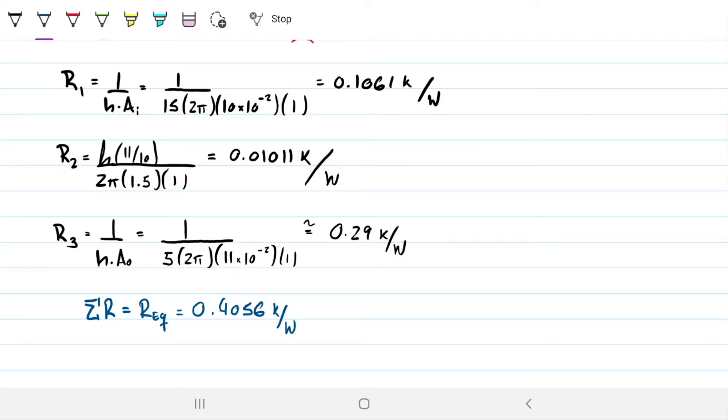And then I could calculate Q would just be the delta T divided by this single R equivalent. And this delta T is the 25 minus 10, so the 15 Kelvin or Celsius, divided by my 0.4056. What did I get here? I got this to be 36.984. And I'm going to go ahead and say this is about 37.